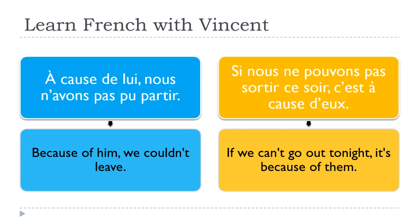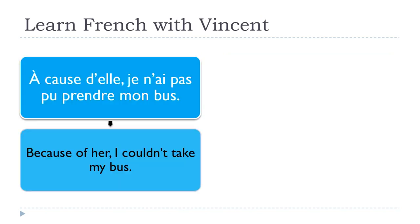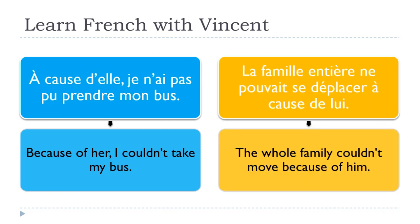« À cause d'elle, je n'ai pas pu prendre mon bus. » — Because of her, I couldn't take my bus. « La famille entière ne pouvait se déplacer à cause de lui. » — The whole family couldn't move because of him. So same thing here — I wanted to put it first and then last, so you can see how it works.